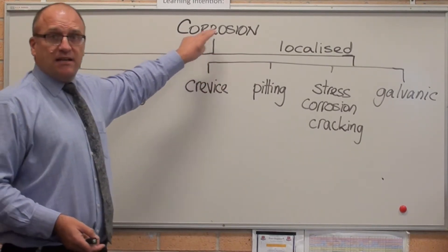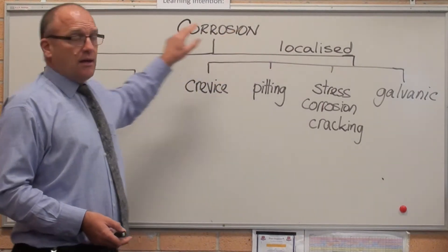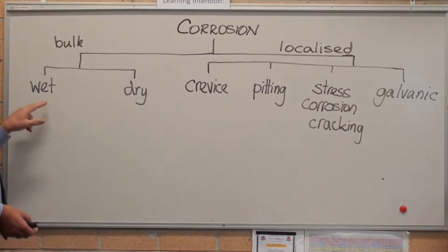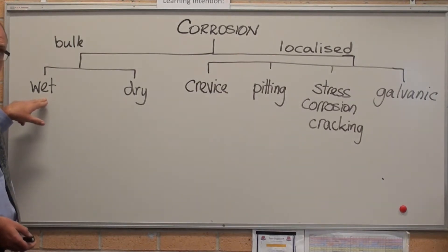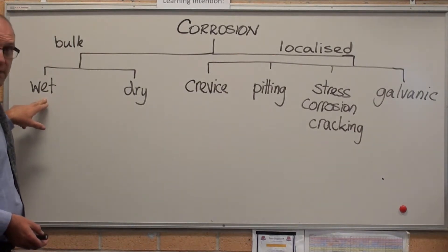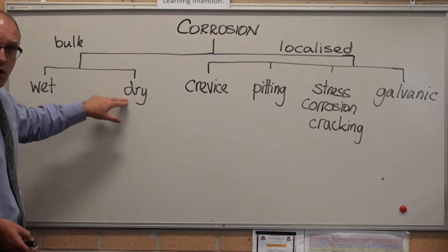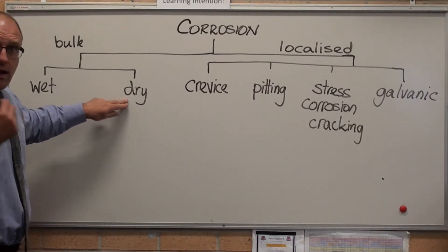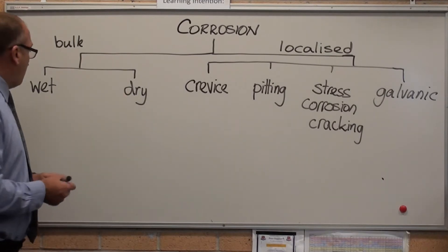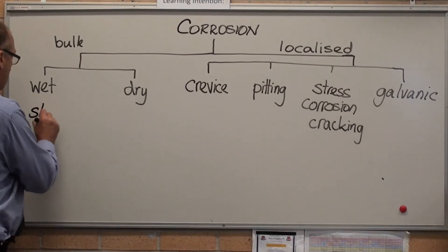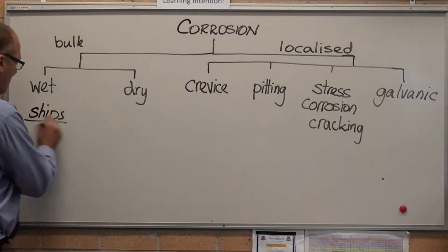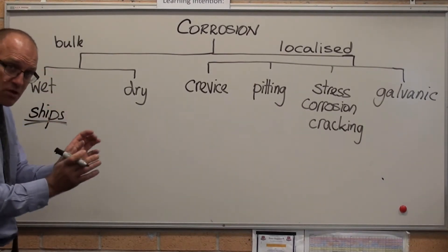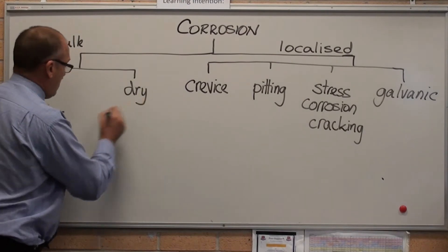Corrosion can be split into localised and bulk corrosion. Bulk corrosion can be aqueous or wet, where it involves waterborne mechanisms, or it can be dry, where it's gaseous corrosion. Where does it actually apply? Wet is ships — it's one of the large ones. Bulk corrosion, the entire hull of a ship is corroding. Dry is pipes.